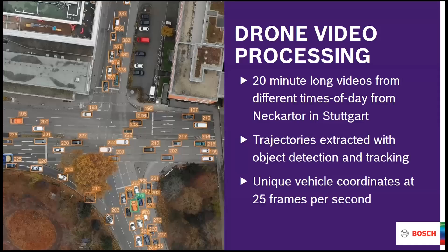In 2018, Bosch contacted an external company — a German company called IT Designers Group — and we handed them a bunch of drone videos from intersections in Stuttgart, Germany. They used object detection on all of them, and their output was trajectories for each car in the drone videos. After some quality iterations, the result was quite good — I would say more than 95% of the vehicles were correctly tracked and recognized throughout the video.